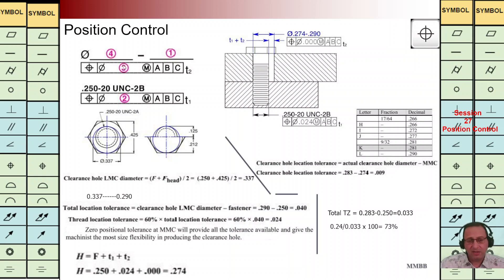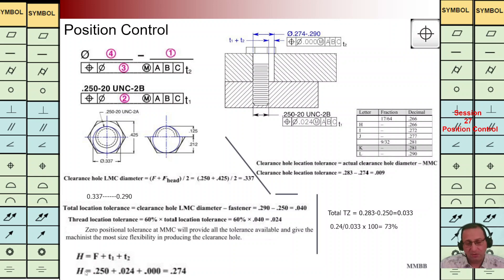For unknown number three, let's consider 0, because here we have MMC. When we consider 0 for that, we cover all available tolerance. Now we have calculated unknowns 1, 2, and 3. We then calculate unknown number four using the formula: H equals F plus T1 plus T2, where H is the MMC minimum size of the hole for the top part. In this manner we can calculate the MMC for the hole diameter.